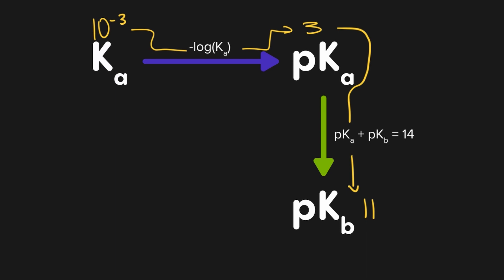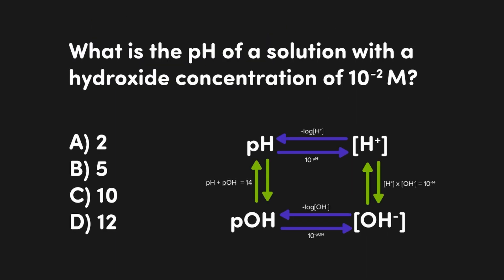Now that we have seen one example of how this works, let's go through two more to solidify the concept. In this question, we're asked to find the pH of a solution with a hydroxide concentration of 10 to the negative 2 molar. Therefore, our starting spot is hydroxide, and we want to end with pH.